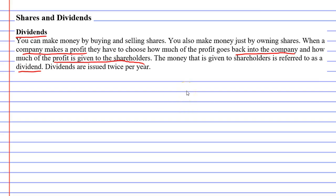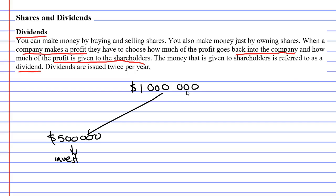Let's look at an example of this. Let's say a company has profits of $1 million. And they say, all right, let's take half of that money — let's take $500,000 — and we're going to invest this back into the company. But the rest of the money, the other half a million dollars,